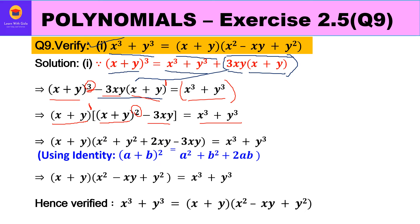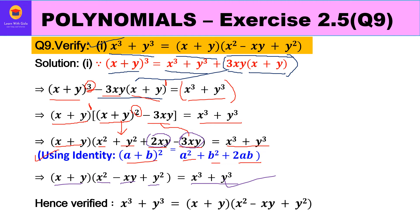We expand x plus y whole square using identity a plus b whole square equals a square plus b square plus 2ab. So x plus y whole square becomes x square plus y square plus 2xy. Combined with minus 3xy, we get 2xy minus 3xy which equals minus xy. Therefore x plus y times (x square minus xy plus y square) equals x cube plus y cube, which is what we had to prove.